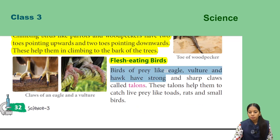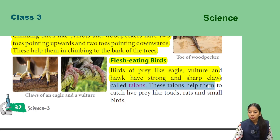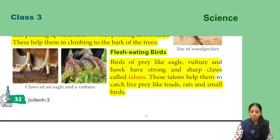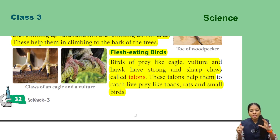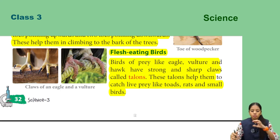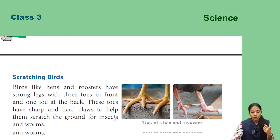Next are flesh-eating birds. Birds of prey like eagle, vulture, and hawk have strong and sharp claws called talons. These talons help them to catch live prey like toads, rats, and small birds.